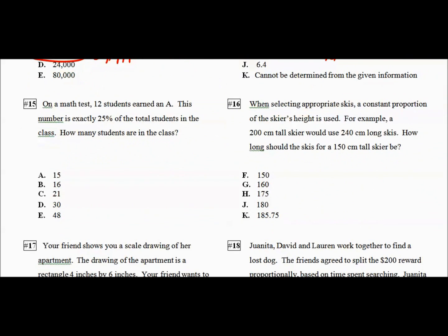Math test. 12 students earned an A. 12 out of X equals 25 out of 100. Cross multiply or just look at it and say it's times 4. Done.